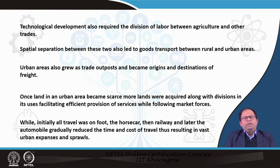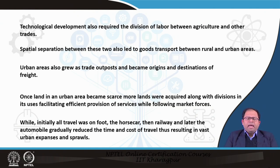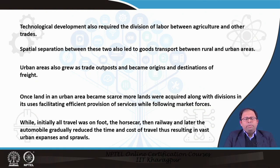When talking about the growth of the city, transportation is obviously a part of the city and transportation started growing as well. Initially when settlements were smaller, people used to travel on foot. Then gradually horse carts came, then railway, and then the main new invention — the automobile — actually started expanding cities at a great pace. That is when cities started expanding very, very fast, which led to the growth of urban sprawls.